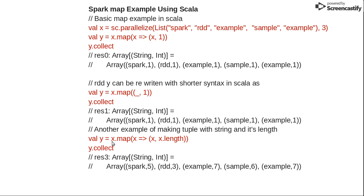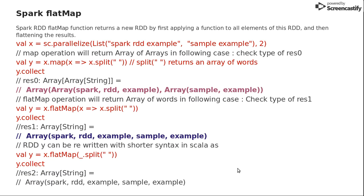In the third example, I'm creating a pair of word and its length. For 'spark' this will be 5, so spark comma 5; rdd comma 3; example comma 7; sample comma 6; and example comma 7. This is the output.